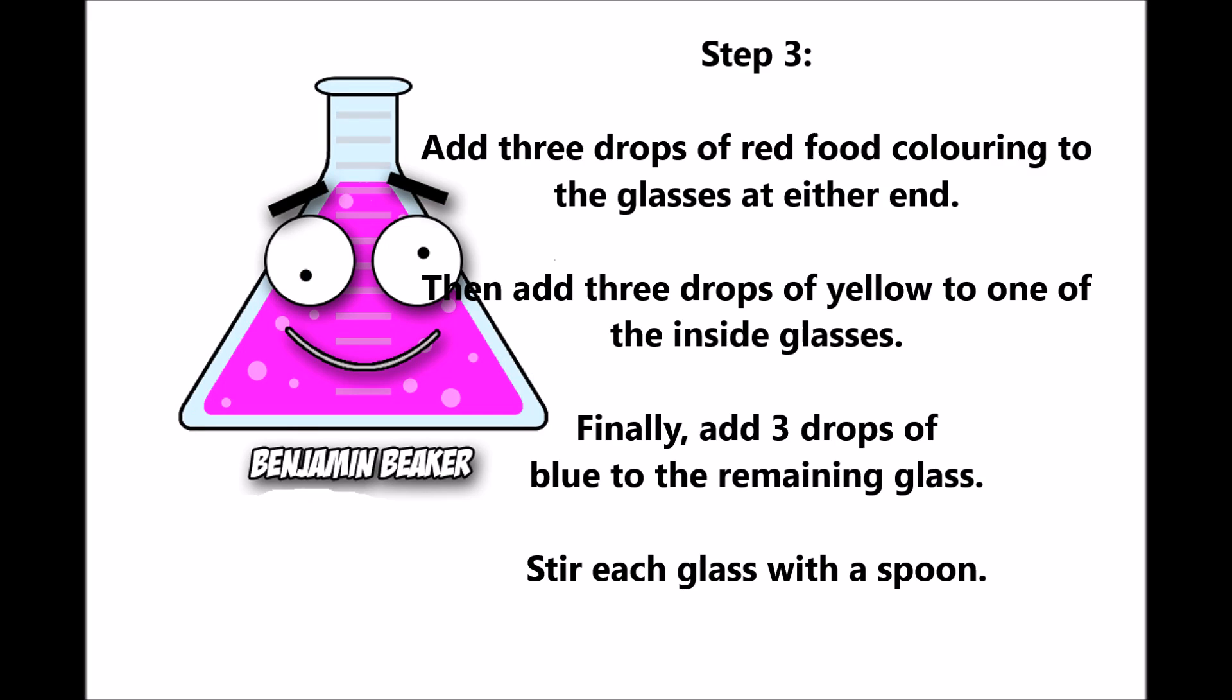Step three: Add three drops of red food coloring to the glasses at either end. Then add three drops of yellow to one of the inside glasses. Finally, add three drops of blue to the remaining glass. Stir each glass with a spoon.